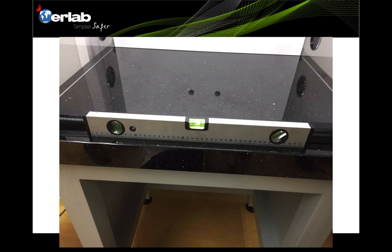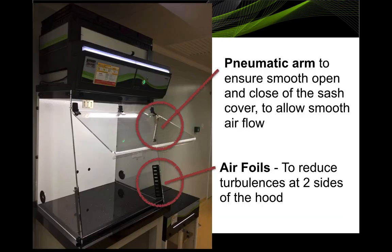The ERLAB CaptureSmart filtered fume hood comes with a stability table with a graphite worktop, which is well levelled. The design is optimized for weighing applications. You get pneumatic arms to ensure the sash cover opens and closes as smoothly as possible. You also get airfoils on the two sides of the opening to reduce turbulence at the sides of the hood. At the top of the filtered fume hood, you get HEPA filters and also carbon filters — HEPA filters for powders and carbon filters for toxic vapors.